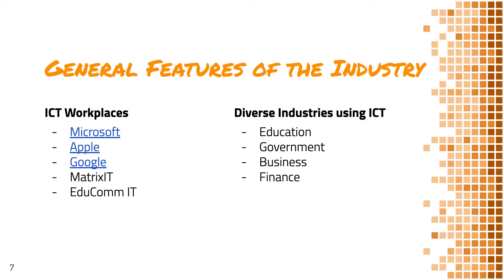In your notes you should have a heading saying 'general features of IT', split into two sections — one for IT workplaces and one for diverse industries, perhaps presented as a table — and you need to list some examples of companies. For IT workplaces, I've got Microsoft, Apple, and Google. Matrix IT is a company you'll become familiar with — we use them for work placements at school, where you go and see what it's like to work as an ICT worker in an ICT workplace. Educom is another example — that's the company our school uses to get laptops repaired. They do the hardware repairs and send them back.